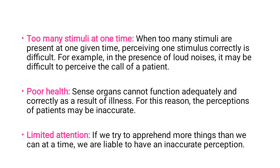Too many stimuli at one time — such as too many loud noises or too much bright light — can also cause inaccurate perception. For example, if your mother, father, and brother are all giving you instructions at the same time, you may not be able to hear what each one says. Similarly, if psychology and microbiology classes were running simultaneously, you would not know which teacher to listen to. Too many stimuli at a time can lead to distraction in perception.